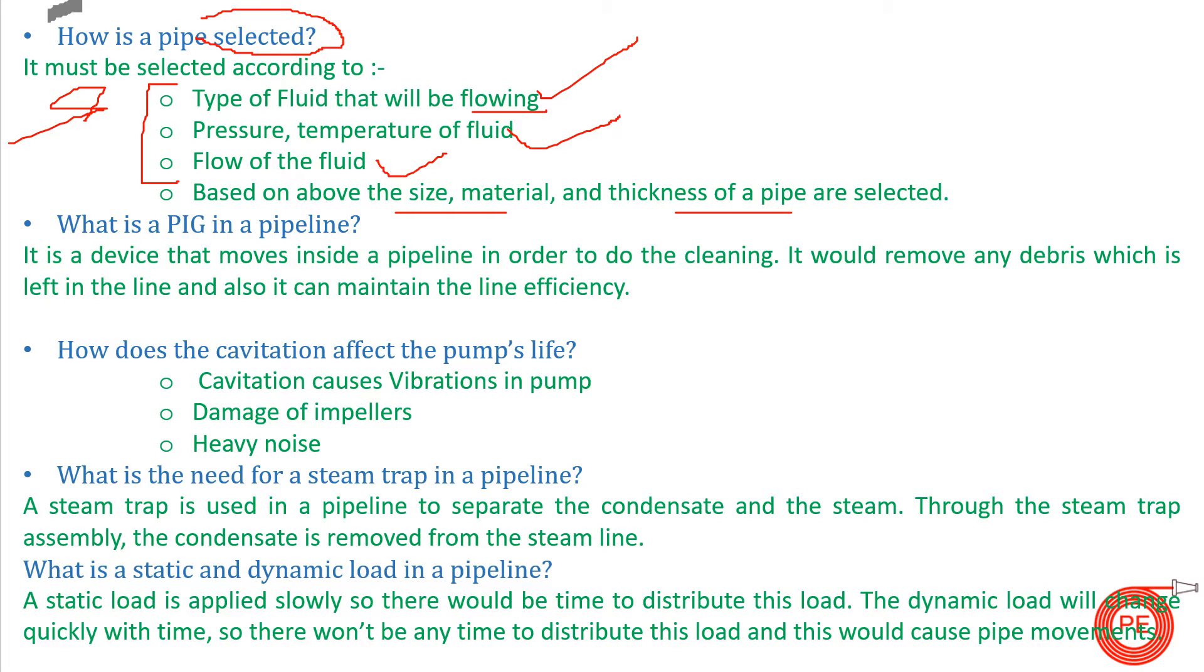Next is: What is a PIG in a pipeline? PIG, or pigging process in a pipeline, is a device that moves inside a pipeline in order to do the cleaning. While doing maintenance, there are some debris or contaminations that stay in the pipe. In order to remove those contaminations, this pigging is done, and it removes any debris from the pipeline and maintains its efficiency.